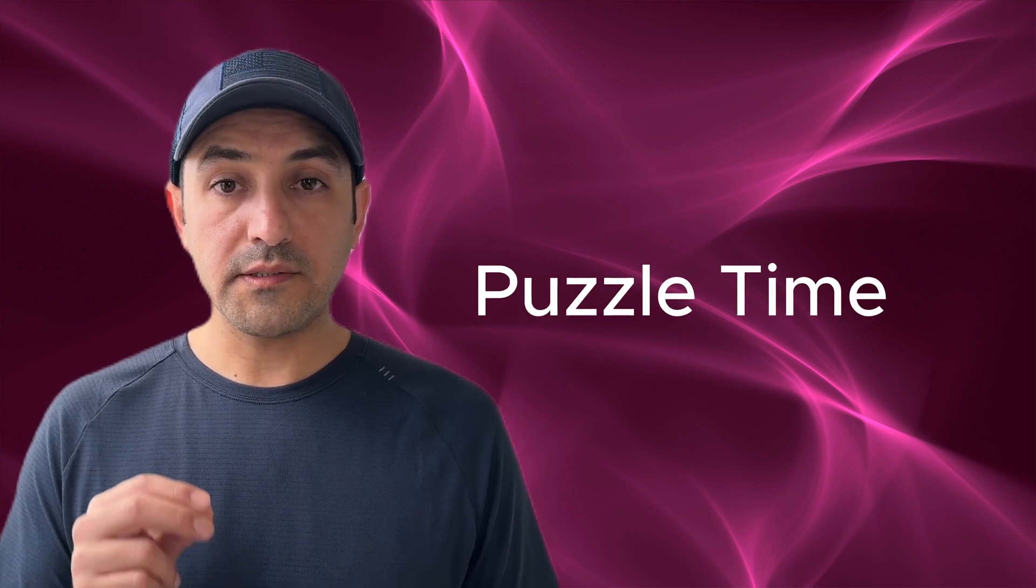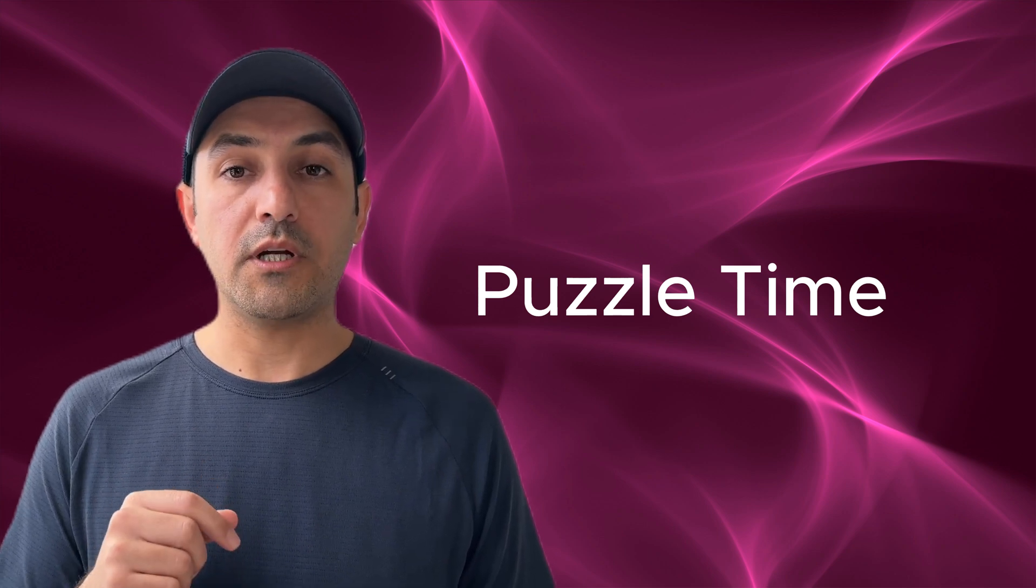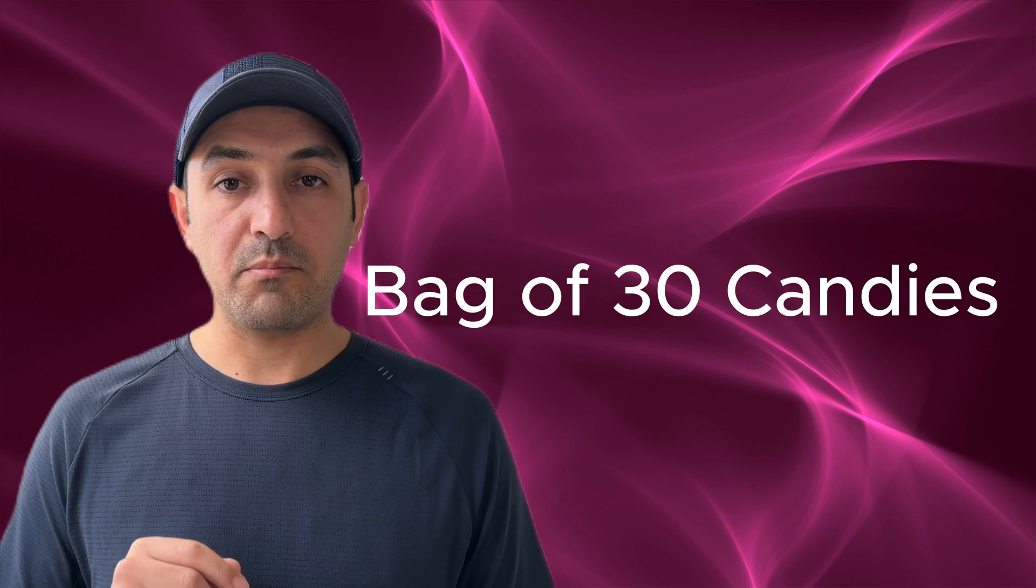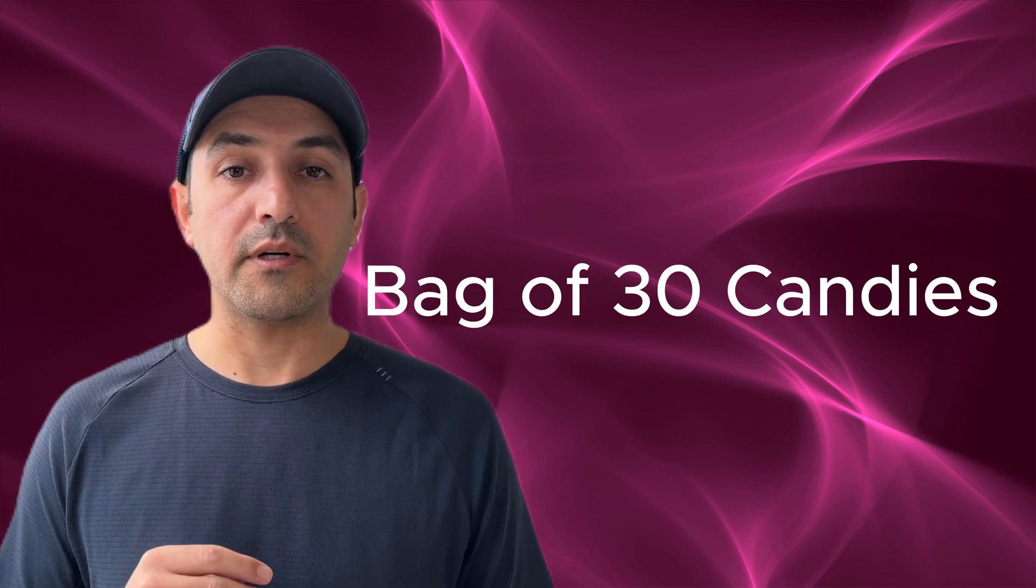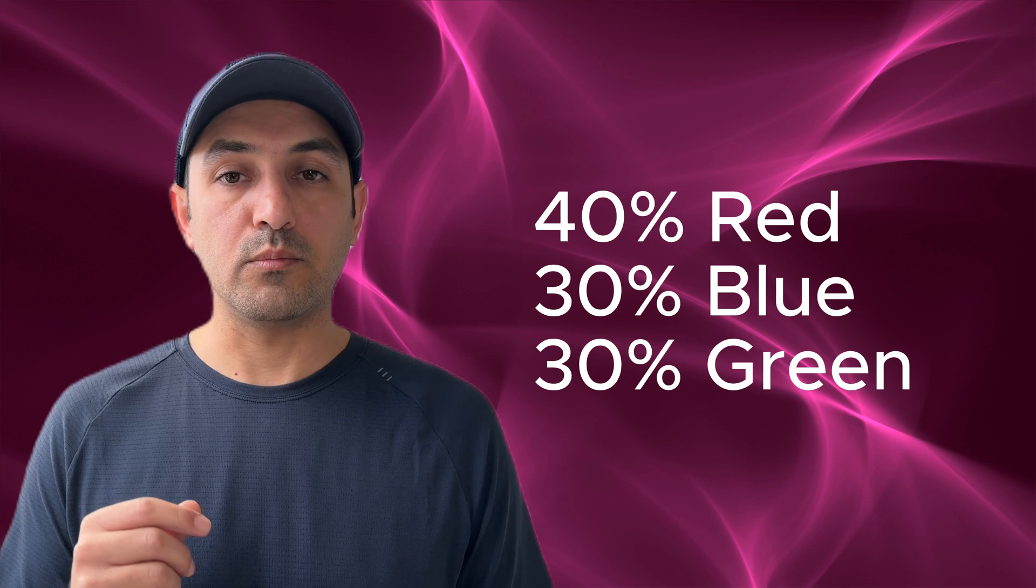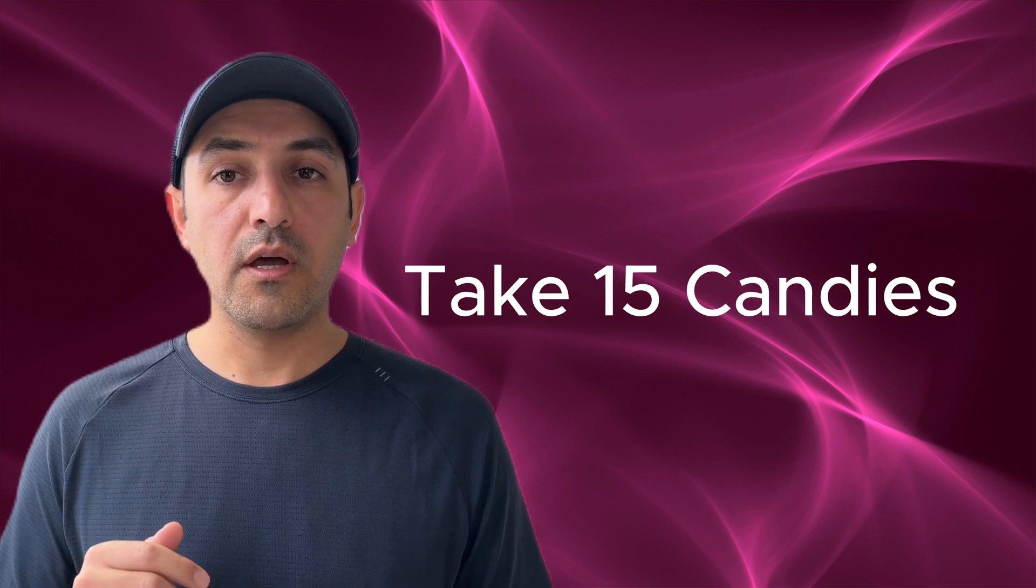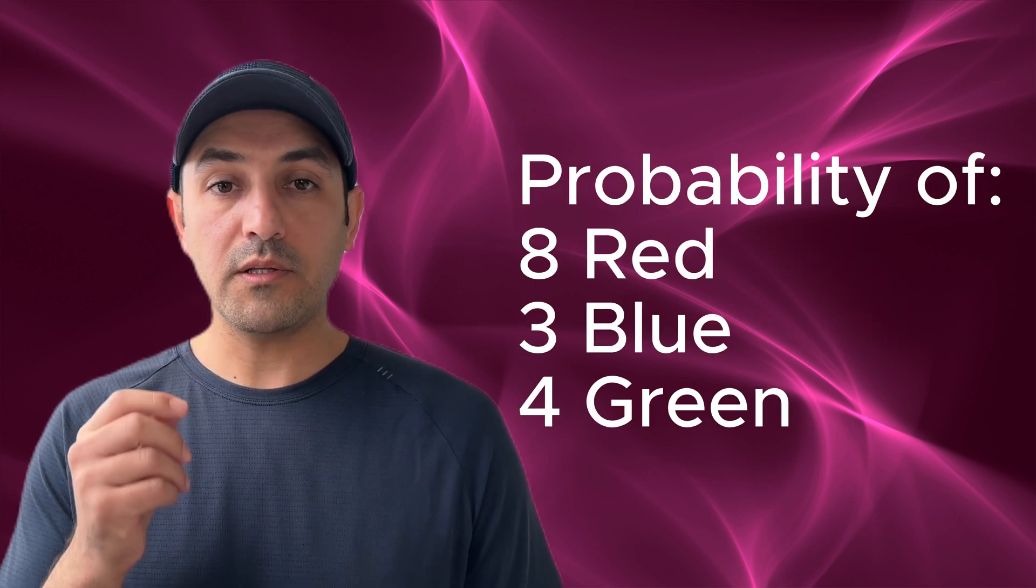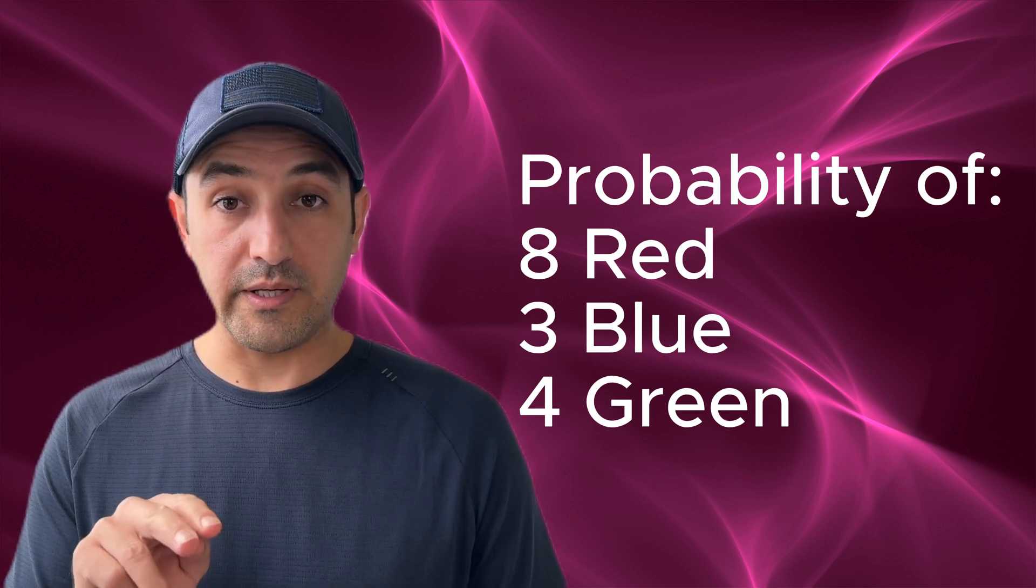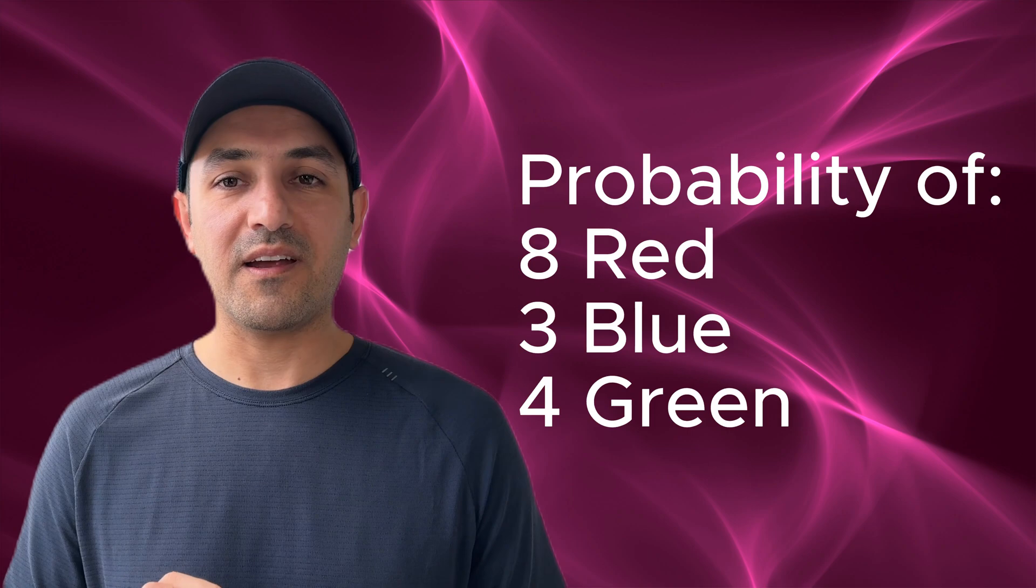And finally, here is the puzzle for you. The first person who gives the correct answer to this puzzle in the comments below will have the option of having his or her name and picture shown as the winner of this puzzle in the next video. Imagine you have a bag containing 30 candies of three different colors: red, blue, and green. The proportions of the candies are 40 percent red, 30 percent blue, and 30 percent green. You draw 15 candies randomly, and after each drawing I will add an identical candy to the bag and shuffle. Now here is the question: what is the probability of drawing exactly eight red candies, three blue candies, and four green candies?